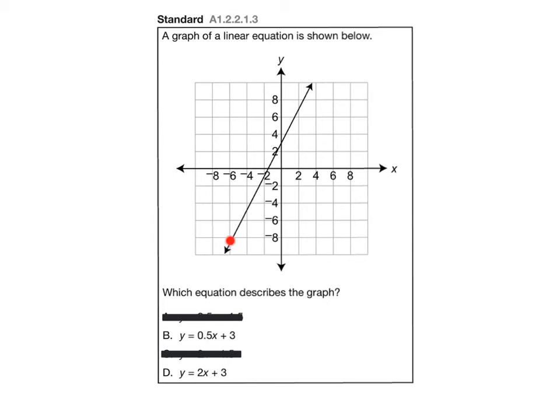So if I start down here and go up two and then over one, notice I'm on the line again. Up two, over one. Up two, over one. So what this just did was eliminate answer B.